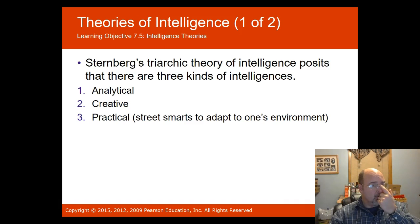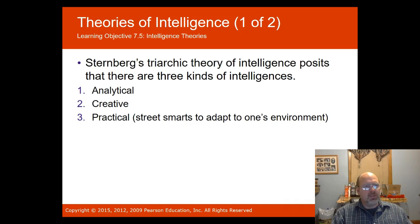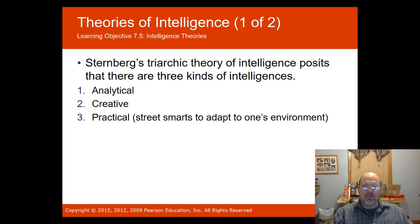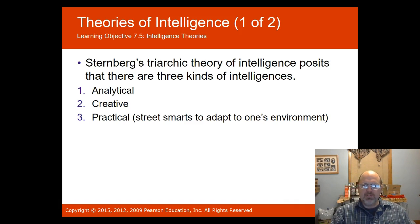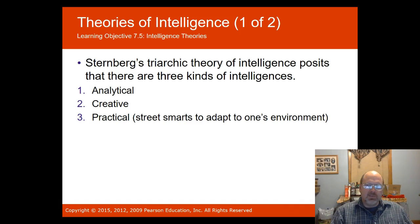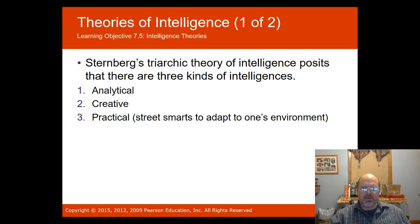Sternberg's triarchic theory of intelligence proposes three types of intelligences. Analytical intelligence is the ability to break problems down into component parts for problem solving. Creative intelligence is the ability to deal with new concepts and come up with new ways of solving problems. Practical intelligence is the ability to use information to get along in life and become successful — often referred to as street smarts.